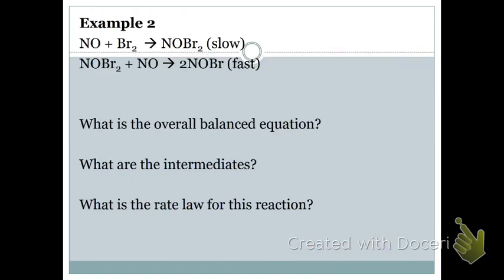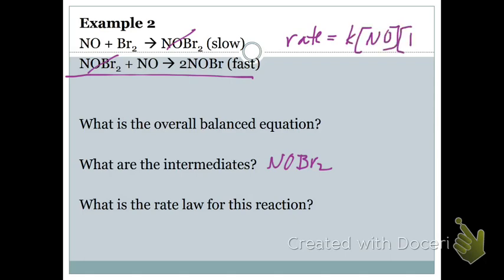Here is another example. This time, our slow step is first. So whatever we write as our rate law for the slow step is going to be our final rate law — because once you reach the slow step, you don't add anything else in. Mark out the intermediates first so we don't accidentally include them. Our only intermediate in this case is one species. The rate law for the first step (slow) is: rate = k[NOBr₂].